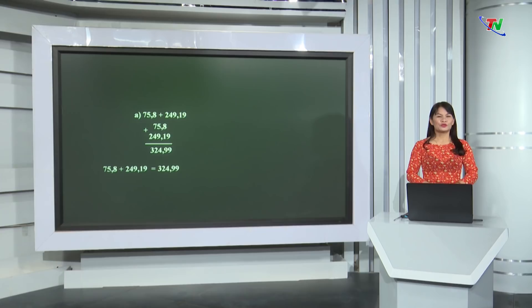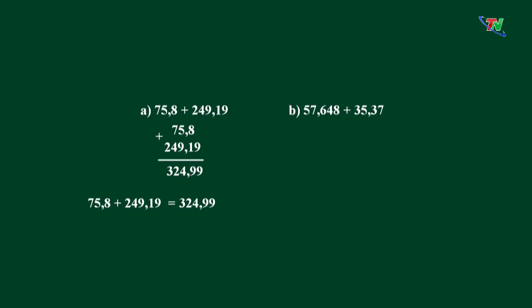Chúng ta tiếp tục chuyển sang phép cộng tiếp theo. B: 57,648 cộng 35,37. Các em hãy tính nhanh kết quả của phép tính này nào. Cô thấy rằng chắc chắn đã có những bạn làm xong rồi. Bây giờ chúng mình cùng quan sát để kiểm tra lại kết quả nhé. Sau khi đặt tính xong, thì chúng ta sẽ thực hiện phép tính cộng, và kết quả cuối cùng tìm được là 93,018. Vậy 57,648 + 35,37 = 93,018.